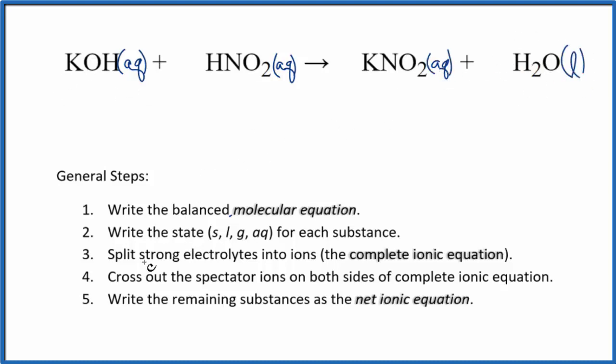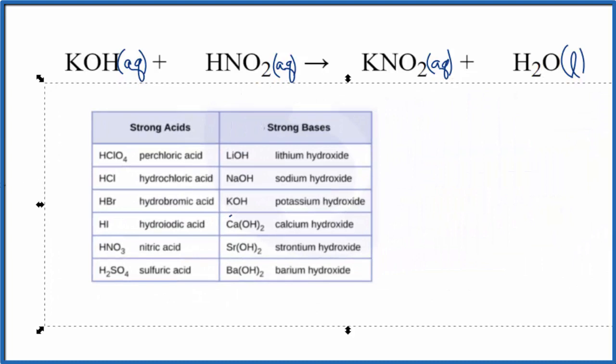So at this point, we have our states, we need to split the strong electrolytes into their ions. So we're looking for the strong electrolytes, and that'll give us the complete ionic equation. With acids and bases, this is probably a good table to memorize. So as we look at the table, KOH, that's right here, that's a strong base.